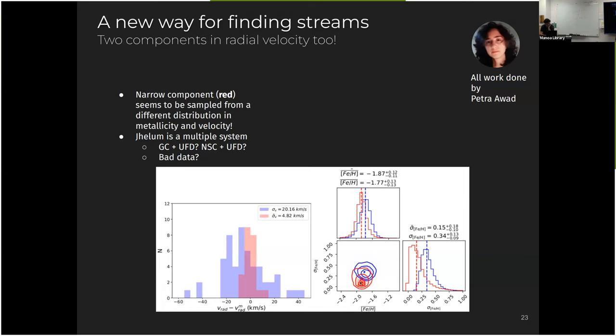However, and that's actually what we observed though, the cold component shown in red has a metallicity dispersion consistent with zero, while the blue component has a metallicity dispersion that is not zero.